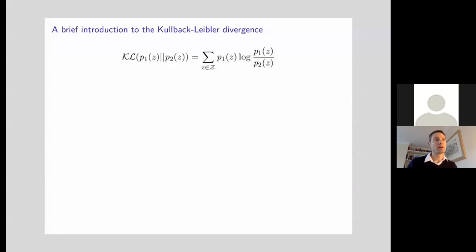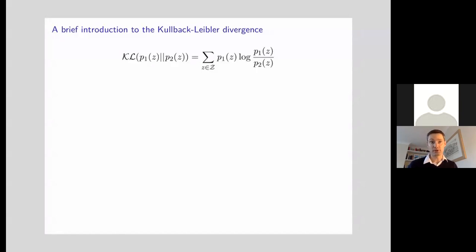In this video we're going to introduce a mathematical object which is going to be really important when we talk about learning and inference, but which also crops up in many other fields such as information theory, statistics, and generally in the field of machine learning. That quantity is called the Kullback-Leibler divergence. I've written out the mathematical definition at the top of this slide, but what I want to do is spend some time going through some simple examples about how to compute it and trying to give you some feel for its properties.